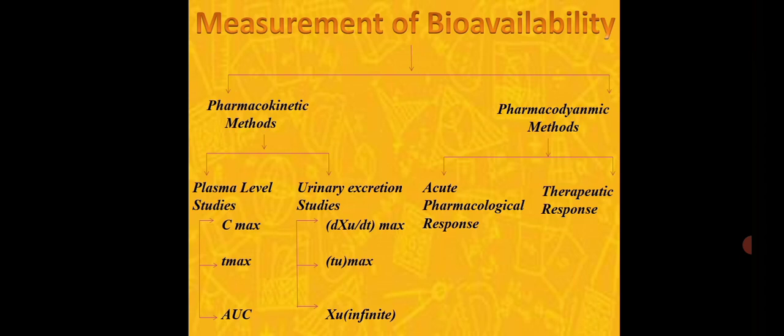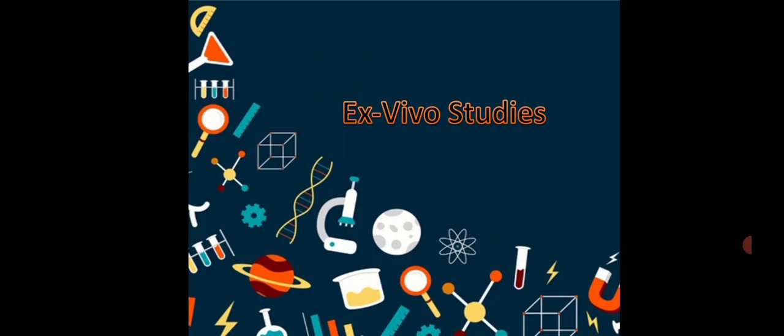What are the ways of measurement of bioavailability? This is basically the pharmacokinetic methods and pharmacodynamic methods. In pharmacokinetic methods, there are two classifications: Cmax concentration maximum, Tmax, area under the curve. And if we are going to analyze the urinary excretion studies, urinary tests are in the laboratories. These are basically DXU by DT, this is kind of differentiation. A small quantity is being analyzed. While in the pharmacodynamic methods, we are going to analyze the pharmacological response or therapeutic response.